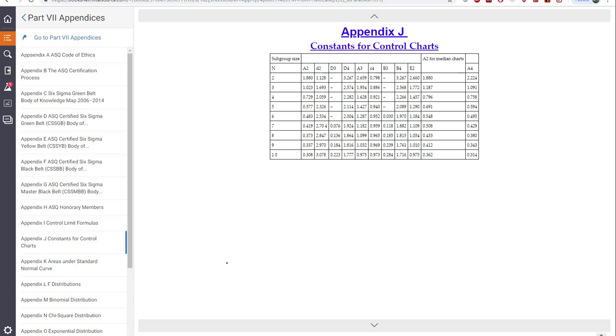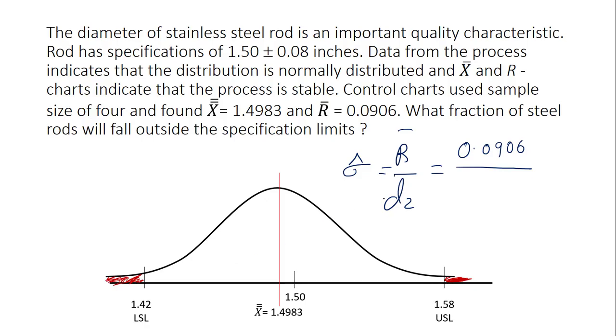If you go to page number 495 appendix J of the Six Sigma Green Belt Handbook you will see the constants for the control chart. We need to see what is d2 associated to the subgroup size or the sample size 4. In this case the d2 for sample size 4 is 2.059. We will insert d2 as 2.059 and the result is 0.044.